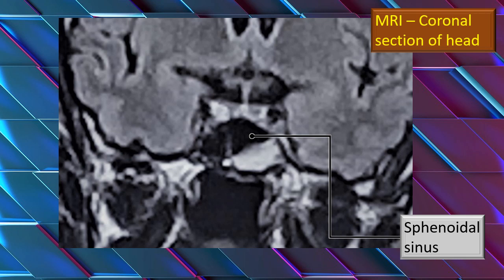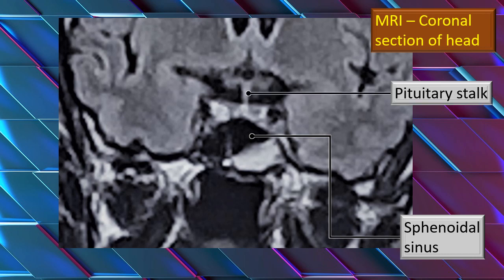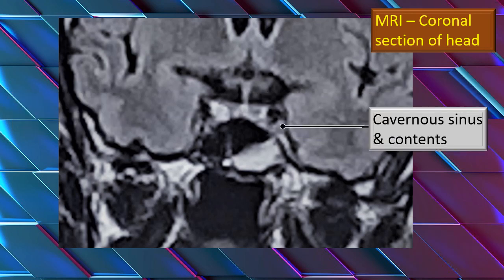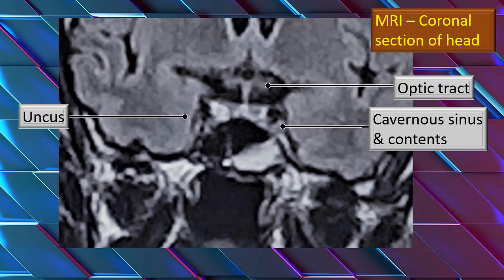I have blown up and expanded that area. First, identify the sphenoid sinus. Right above it is the pituitary stalk, and the pituitary fossa with the gland. More laterally, the cavernous sinus and its contents — mainly the internal carotid, and the third, fourth, and fifth cranial nerves particularly along the lateral wall. The optic tract is also visible. The uncus is much more lateral to the cavernous sinus but is nevertheless an important relation to the sphenoidal sinus. The nasopharynx is right below the sphenoid sinus. This gives you a complete picture of the strategic, central location of the sphenoid sinus and how many structures are related to it.